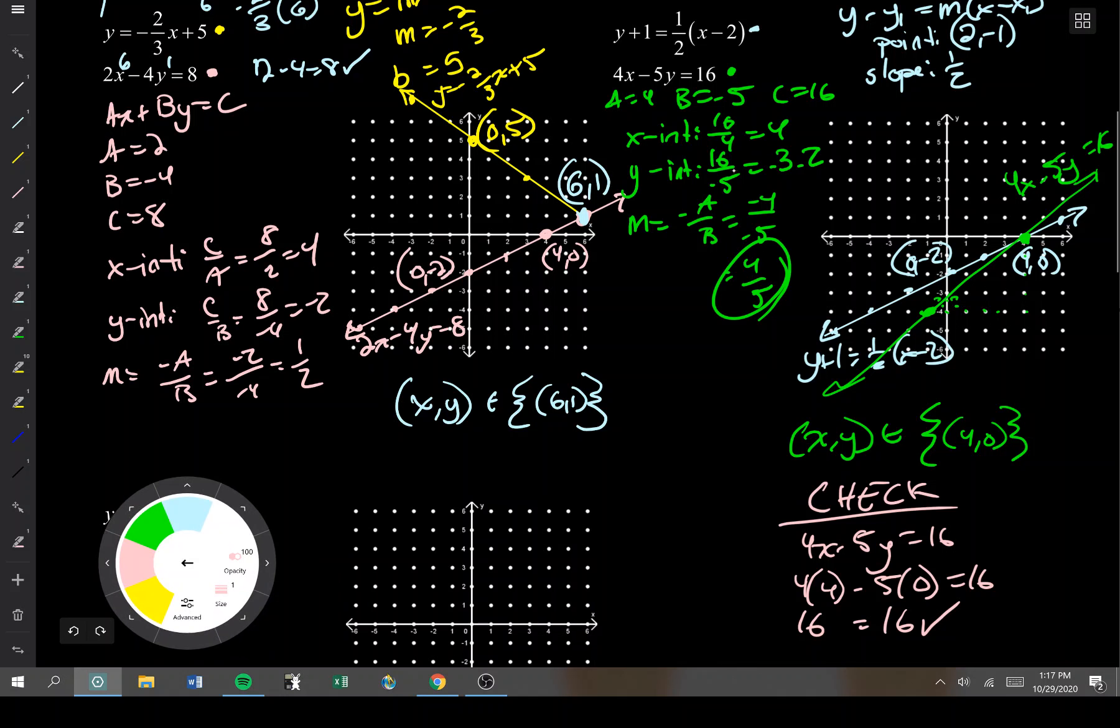And I'm going to check the other equation, make sure it works in both. So I have y plus 1 equals 1 half times x minus 2. But my y value is 0, so this is plugging in for y. My x value is 4. This is plugging in for x. So it becomes 1 equals 1 half times 2, which is 1, so that also checks. Sweet. This is my solution.